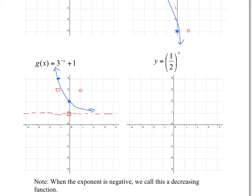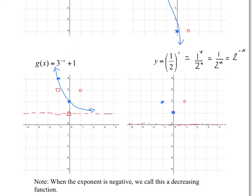For the last one, f of x equals 1 half to the power of x. We can rewrite this as 1 to the power of x divided by 2 to the power of x. Since 1 to the power of anything is 1, this simplifies to 1 over 2 to the power of x, which is 2 to the power of negative x. So this is just an exponential function with base 2, and the negative in the exponent gives a reflection over the y-axis. Final points and asymptote at y equals 0.